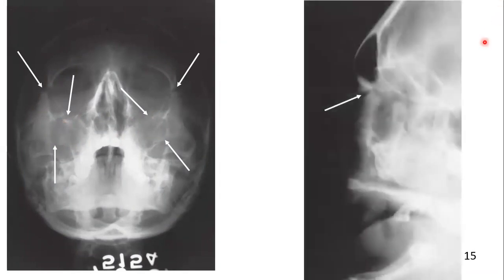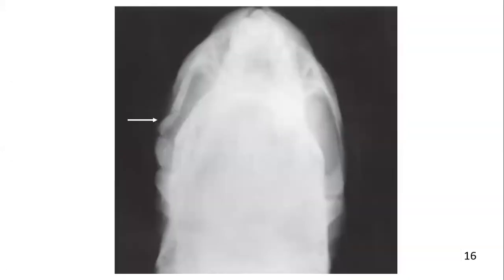In this other radiographic picture, this is a lateral skull view that illustrates a Le Fort III fracture or craniofacial separation. The fracture line shown by arrows separates the midface from the cranium. This submental vertex view demonstrates a zygomatic arch fracture.